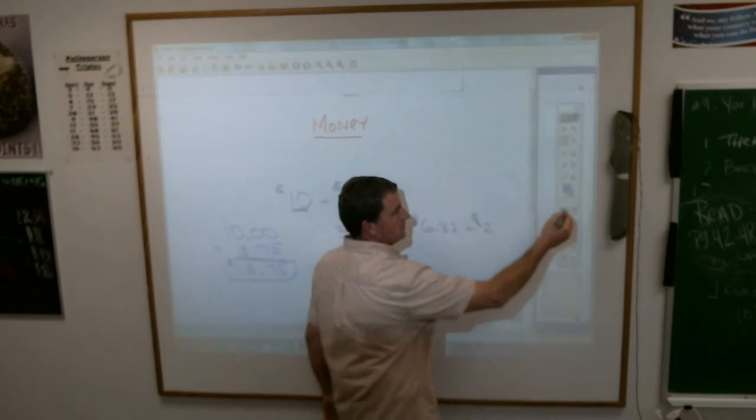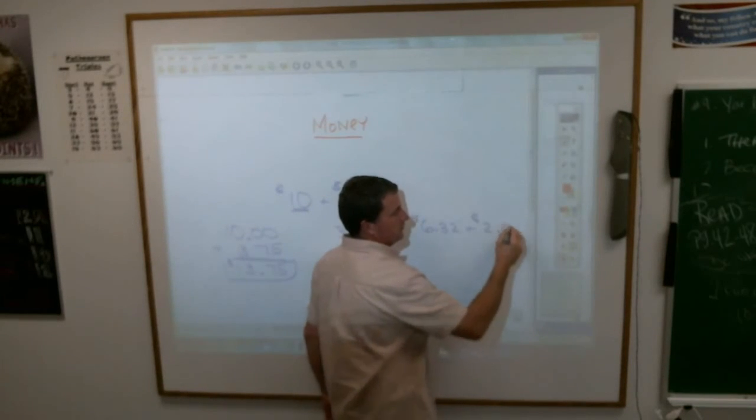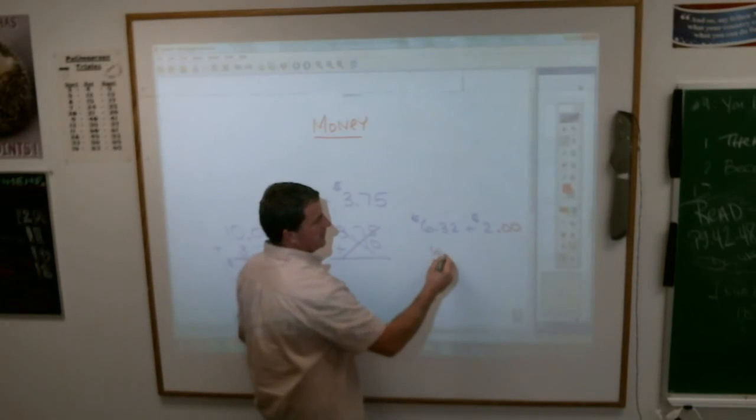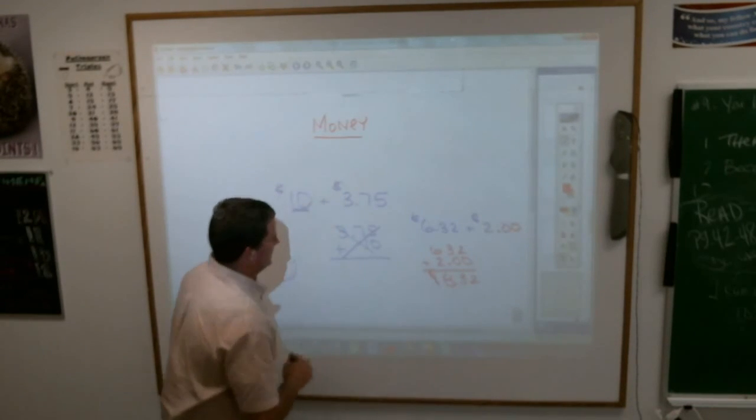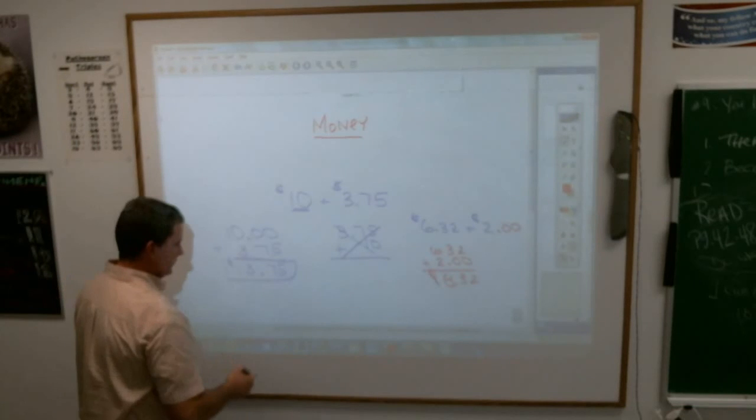So you have to add the decimal point with the cents in there, so it's $6.32 plus $2.00. So you get $8.32. Does that sound relatively reasonable and appropriate?